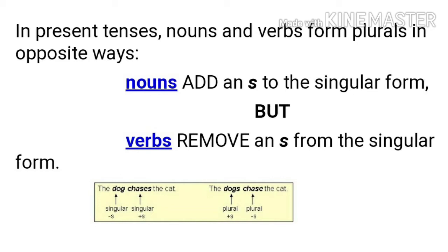See the example: 'The dog chases the cat.' Here 'dog' without 's' is in singular form, but 'chases' with 'es' is in singular form. Now the opposite example: 'Dogs chase the cat.' Here 'dogs' with 's' is in plural form, but 'chase' without 'es' is in the plural form.